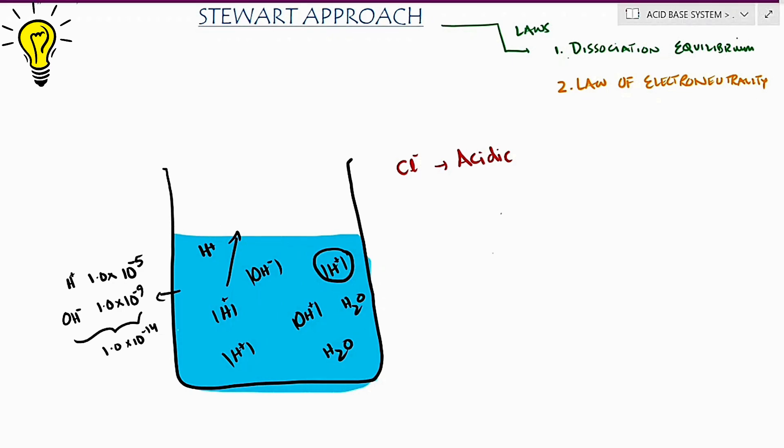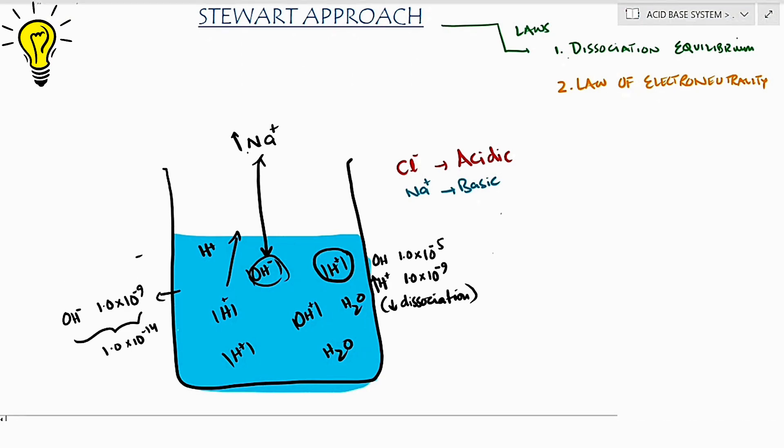What about sodium? It would pull away the hydroxyl ions from water to maintain the electroneutrality in body. To conserve the law of dissociation equilibrium, water will this time not let the hydrogen ions break away that easily into body. So can I say these cations are basic in nature as they derive hydroxyl ions into the system and stop water from giving away the hydrogen ions easily? This explains how sodium in soda bicarb helps tackle acidosis.